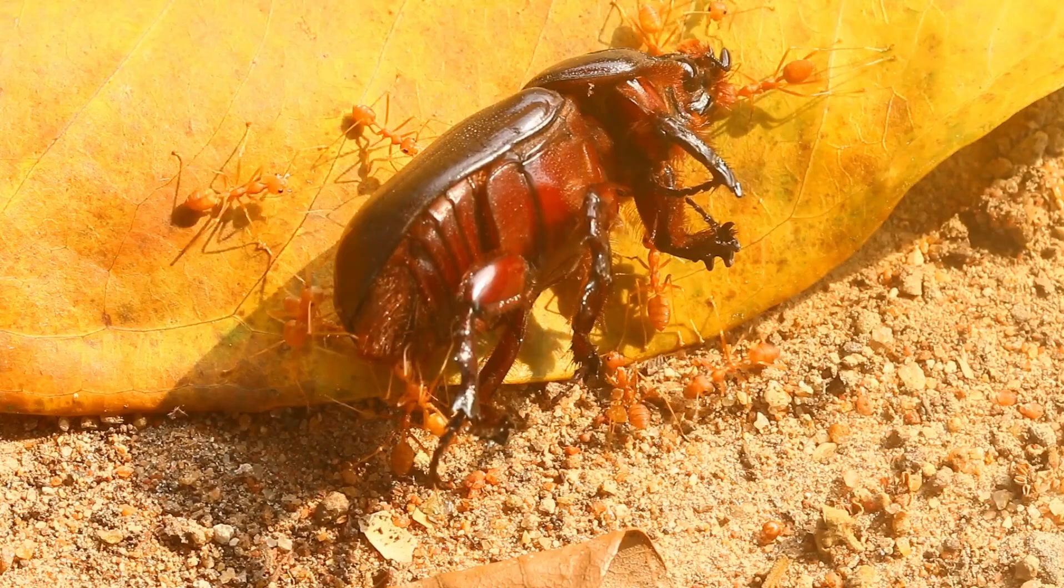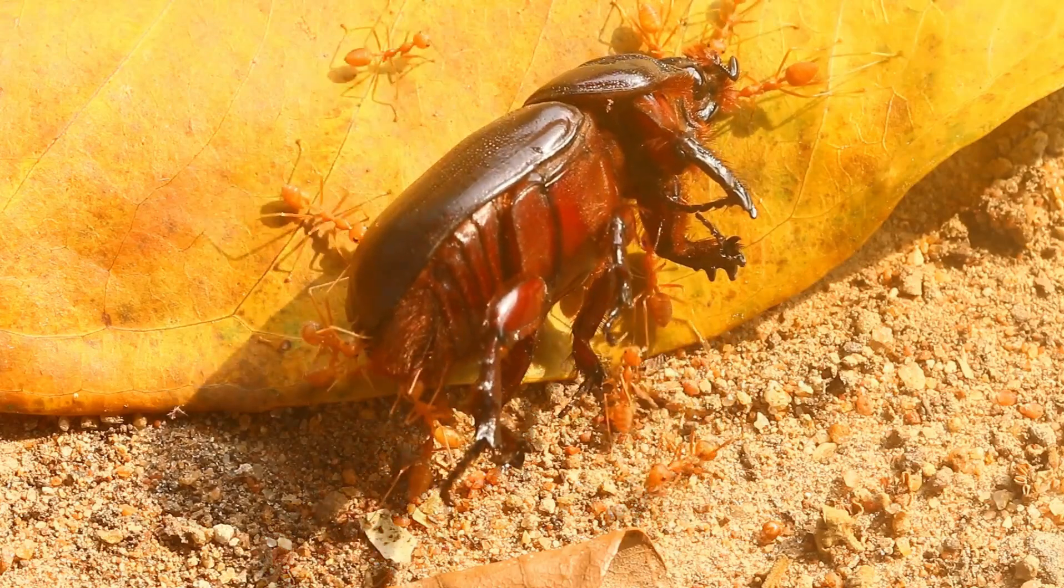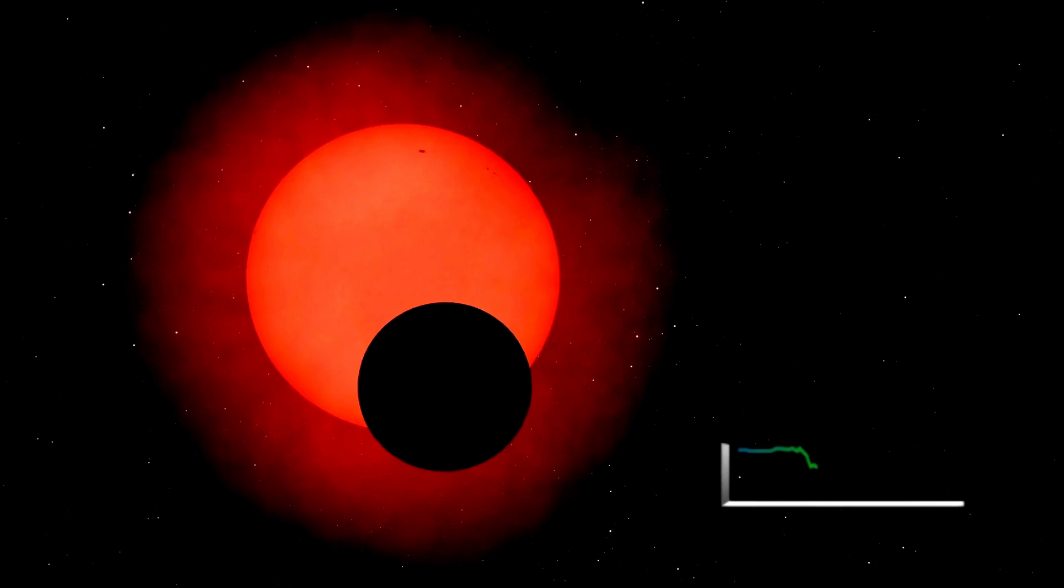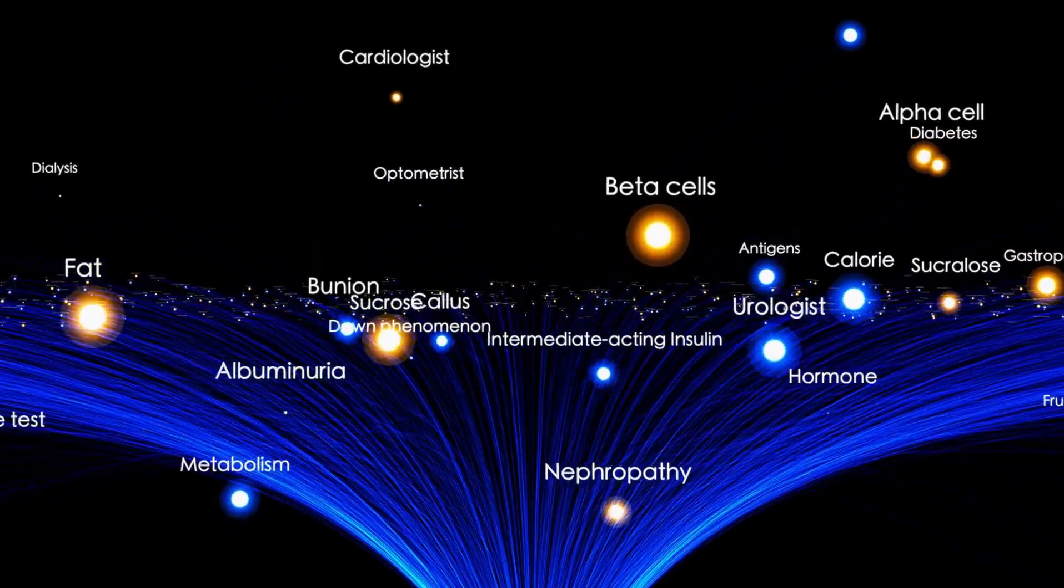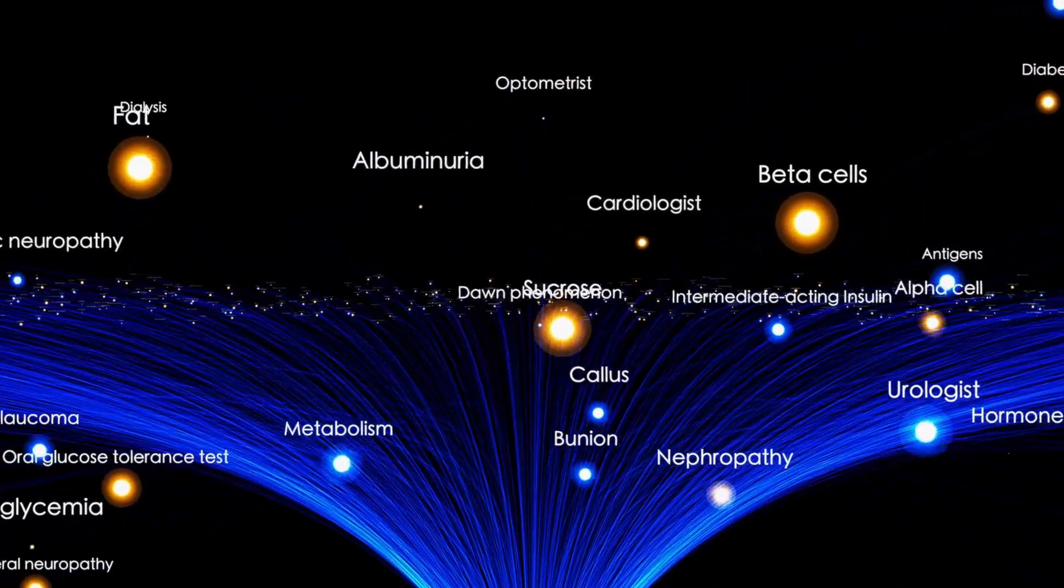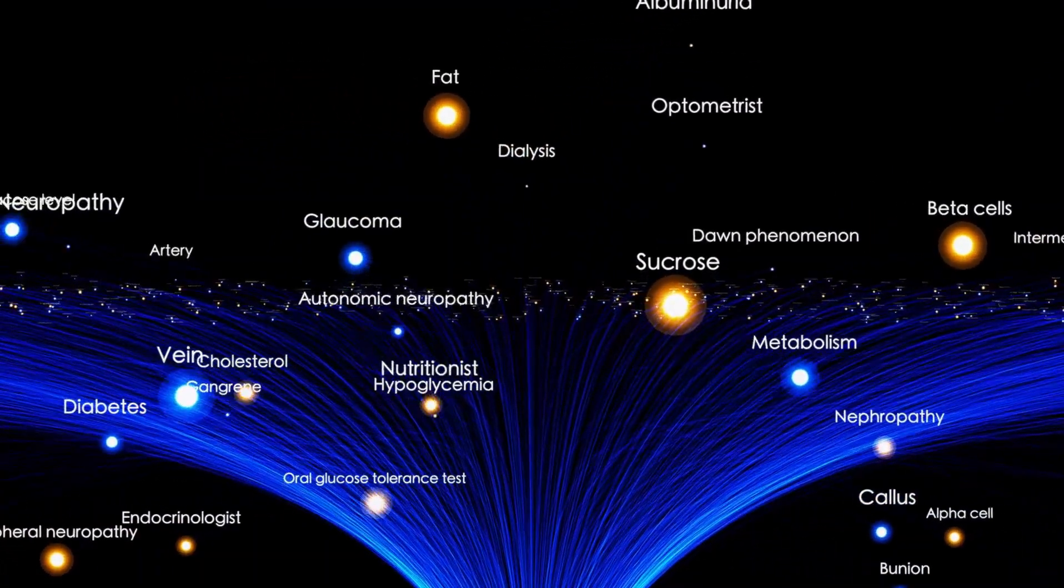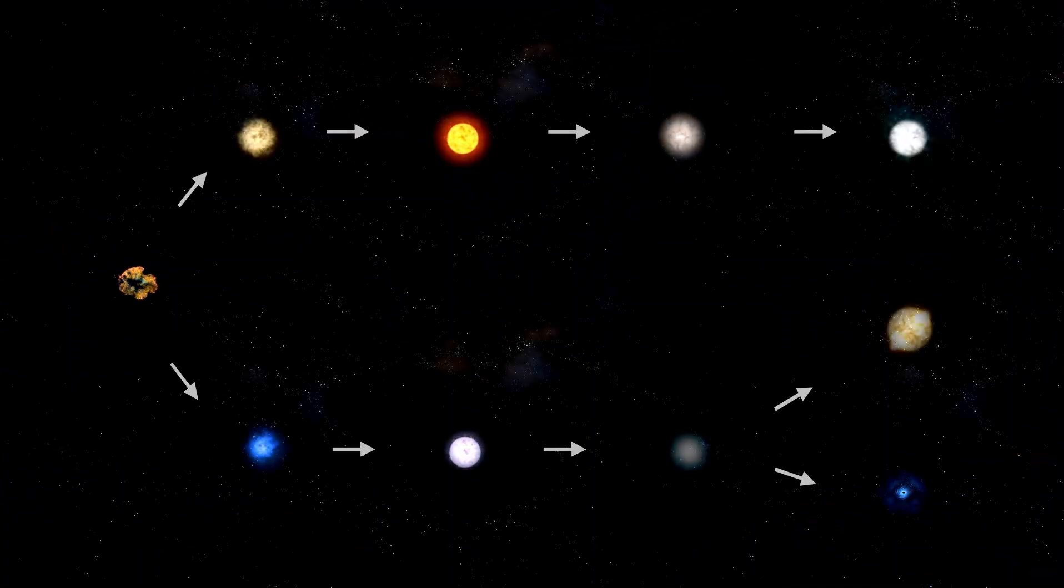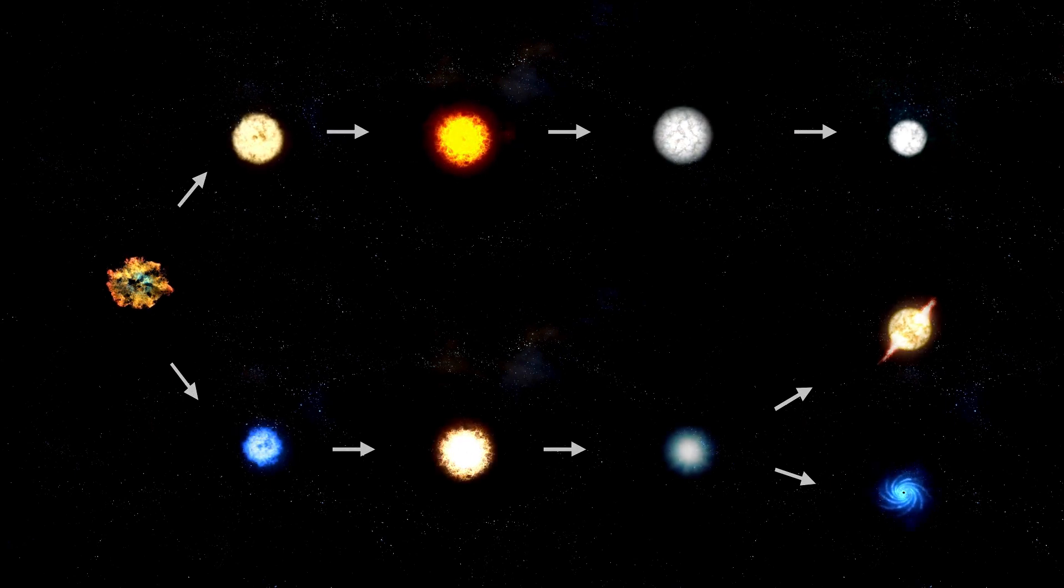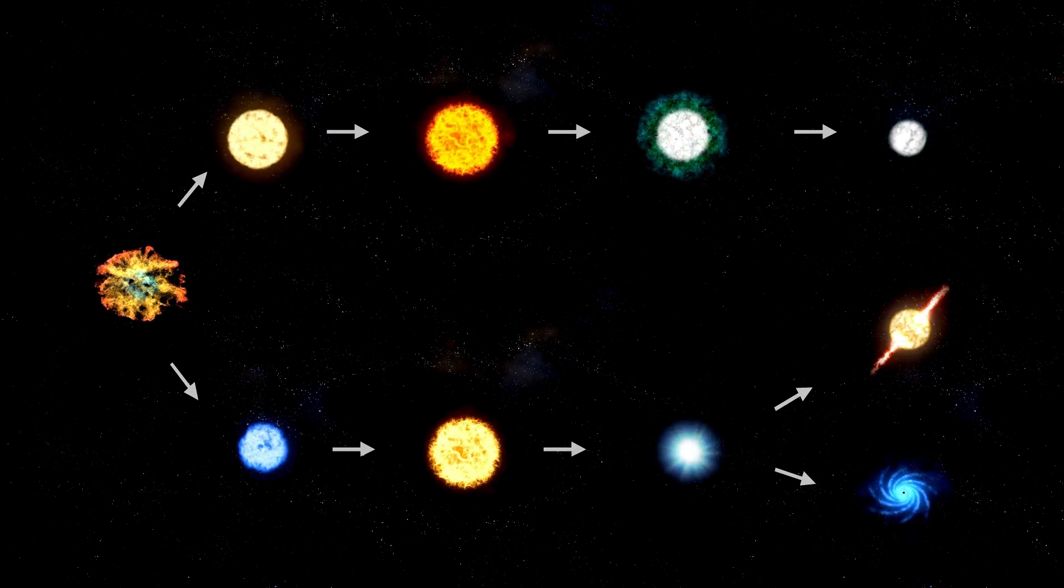But what about the age of Betelgeuse? This star, believed to be around 8 to 8.5 million years old, is relatively young in human terms but ancient in the context of stellar lifetimes. Its current red supergiant phase is the culmination of millions of years of stellar evolution, a period marked by dramatic changes in processes that have transformed it from a hot blue star to the red giant we see today.